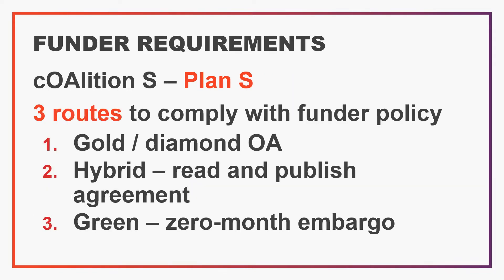If you are publishing a journal article that acknowledges research funding you will likely have requirements from your funder that you would need to follow. Coalition S is a consortium of research funders that includes UKRI, the EU Commission and Wellcome. Coalition S funders all require open access publication. This is because of Plan S, the set of principles devised by Coalition S that requires full and immediate access to all Coalition S funded research. In order to comply with Plan S, if your research is funded by a Coalition S funder, you must follow one of the following routes when publishing your work.